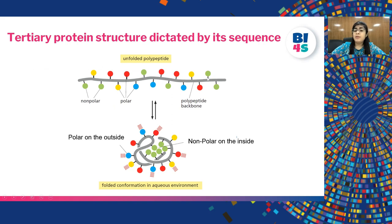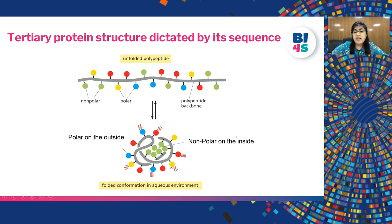Based on the type of amino acid present in the sequence, the protein structure is formed. Proteins are present in cells, and cells contain a lot of water inside them. So the protein folds itself such that the polar amino acids remain on the outside surface, while the non-polar amino acids go deep and get buried inside the structure. In this manner a stable tertiary structure of a protein is formed.